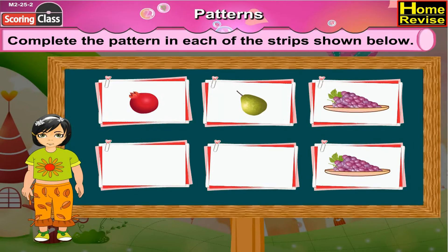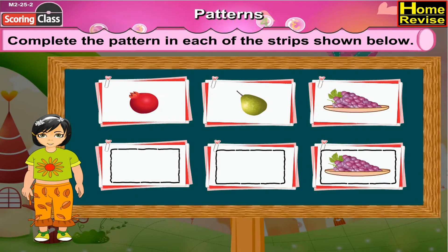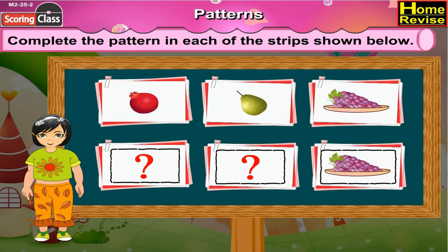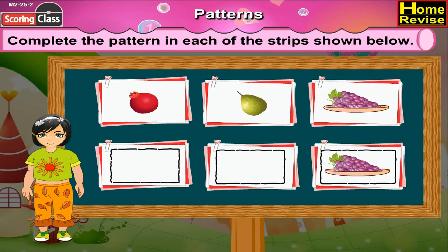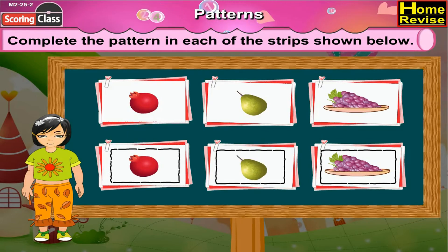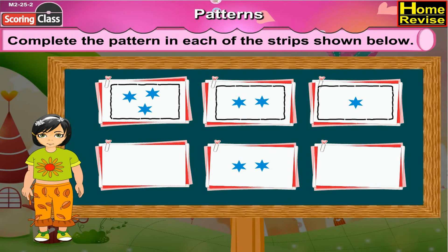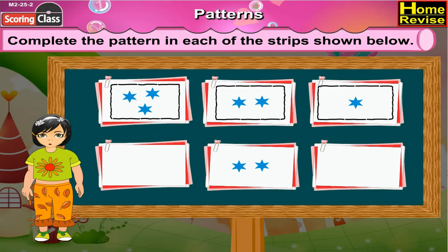Now the next pattern strip. Let us see the first three boxes. If you notice the next three boxes, in the third box you will see grapes just like the previous third box, and the first two boxes are empty. So here pomegranate will come and here pear will come.